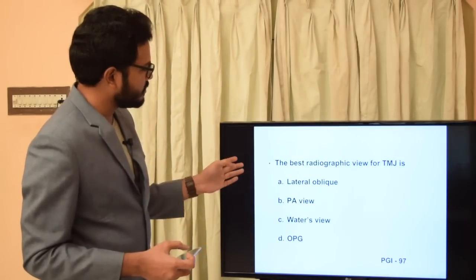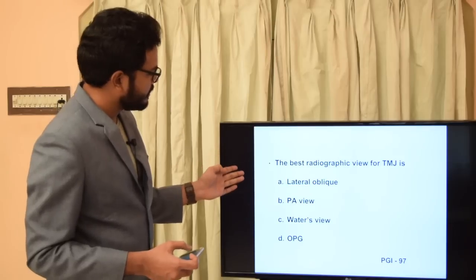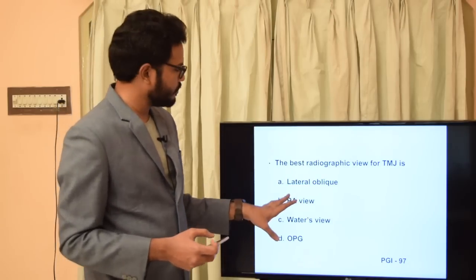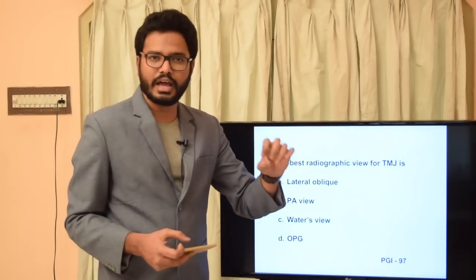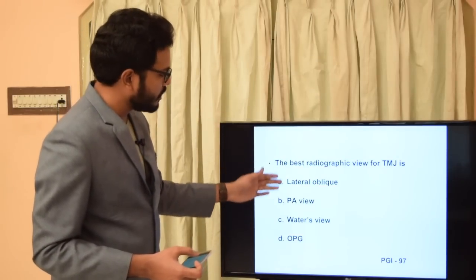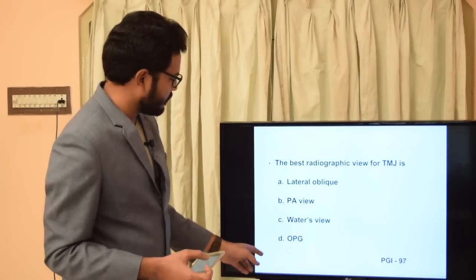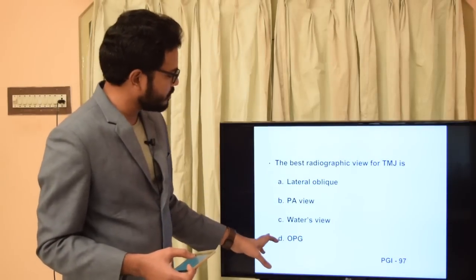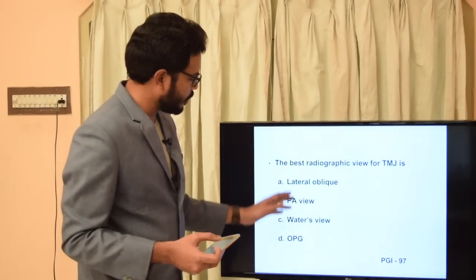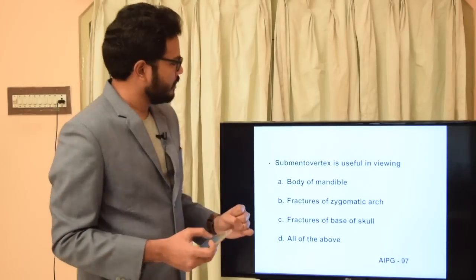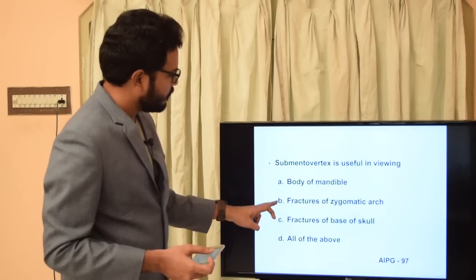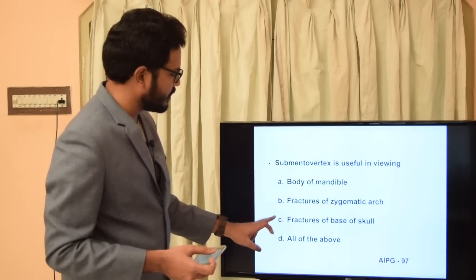The best radiographic view for TMJ from options: lateral oblique, PA view, Waters view, or orthopantomograph. Ideally for TMJ evaluation it's transpharyngeal or infracranial; however, among the given options the most appropriate answer is the orthopantomograph, as other projections offer no chance to observe the TMJ. Next: submental vertex view is useful in viewing — body of mandible, fracture of zygomatic arch, fracture of base of skull, or all of the above. The answer is all of the above.